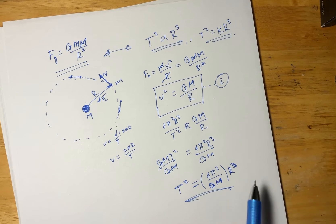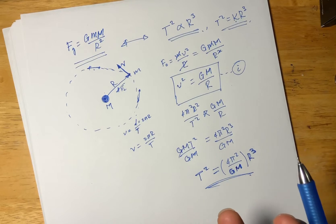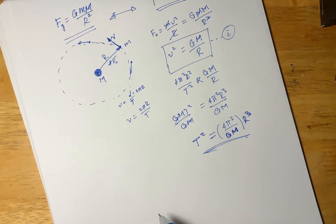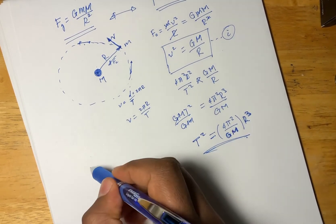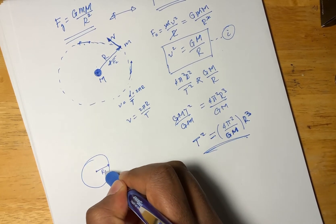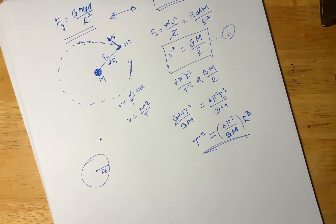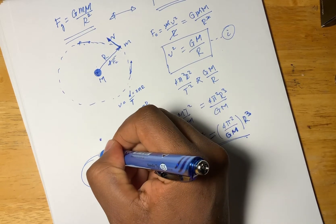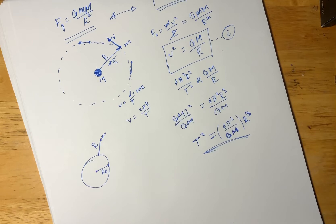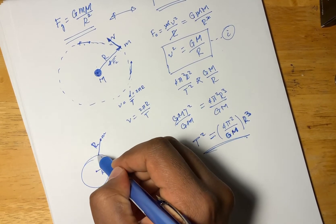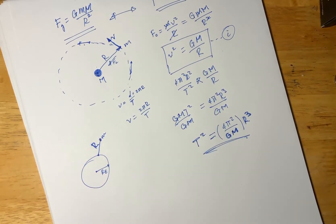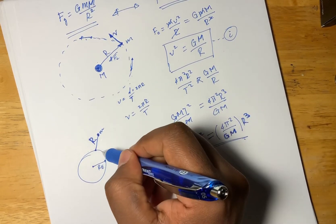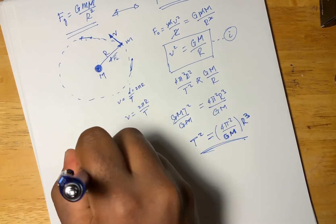Now let's look at the application. Newton was a genius. Let's call R the radius of the Earth. For a satellite orbiting the Earth, the total distance from the center is the radius of the Earth plus the orbital height r. As you know, in gravity, we don't measure from the surface but from the center of mass.